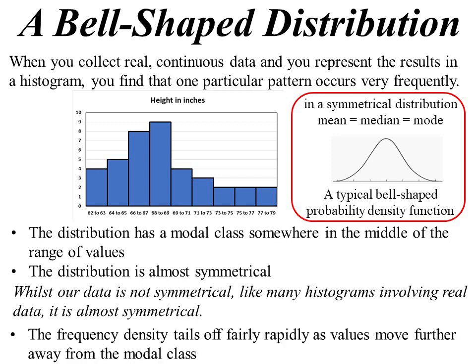But this is the other thing you're looking for in the data, that the frequency density tails off pretty rapidly as you move out. So it sort of comes down to that tail. Which brings us to the perfect one, the classic one, what we call the normal distribution.